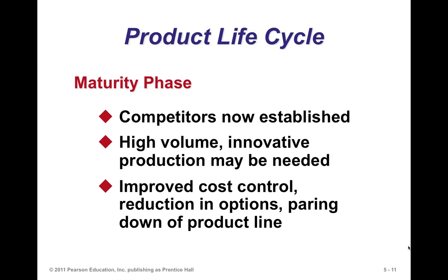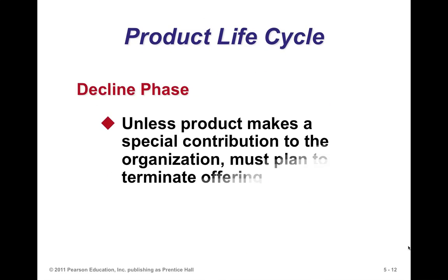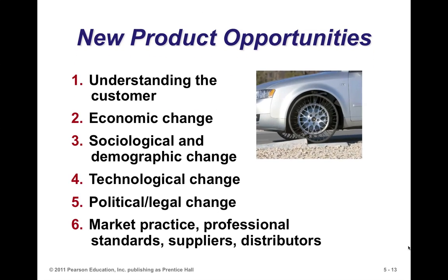At the maturity stage, many people have observed the product doing well, so a bunch of competitors come in and make things difficult. You have to find ways to differentiate yourself. Cost control is very crucial because you have substitutes, and consumers will go for cheaper products unless they have brand loyalty. So you invest in maintaining brand loyalty while trying to reduce production costs. In the decline stage, the market is shrinking, and at some point you may want to consider terminating the product offering or redesigning it so it can go through a new life cycle.